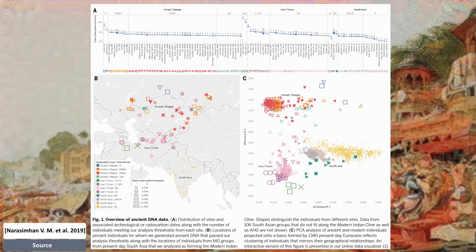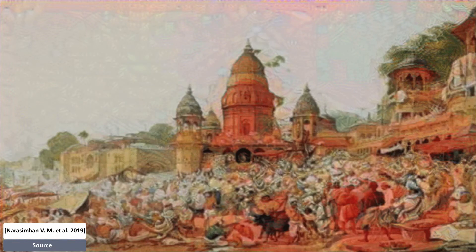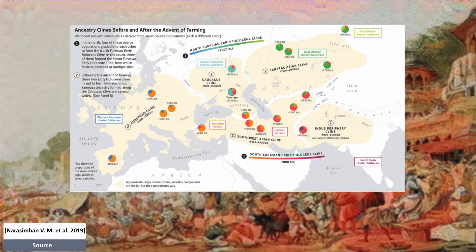India, with its Hindu tradition and sole surviving live Indo-European religious tradition in the world today, turns out to share core migration characteristics with Europe. The story starts more than 7,000 years ago. At this time in the north, we have the north Eurasian early Holocene cline of four source populations gradually blending into each other: the Anatolian, Iranian, and South Asian hunter-gatherers. With the development of agriculture in the Fertile Crescent, there is a massive immigration of Anatolian farmers to Europe, and great Neolithic civilisations develop.